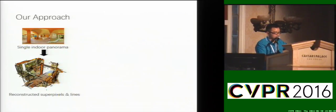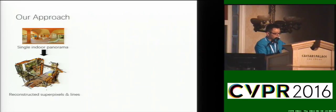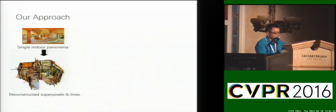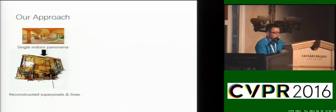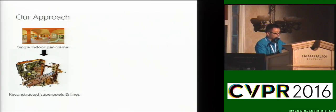In this work, we propose an algorithm that can automatically recover a more general room geometry from a single indoor panorama. The result is a collection of 3D superpixel polygons and 3D line segments that can depict the shape of the room.